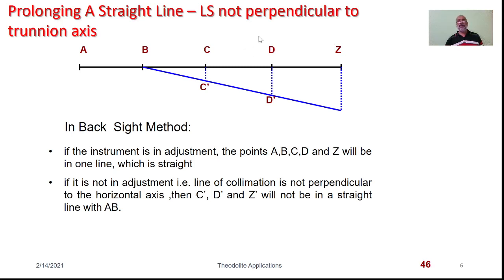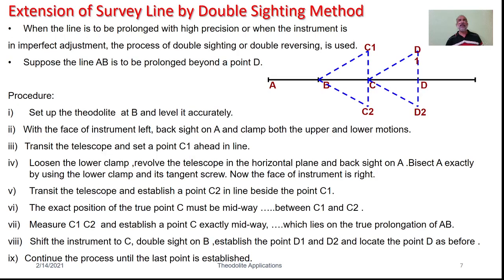Sometimes the line of sight could be erroneous and may not be perpendicular to the trunnion axis. As we follow the backsight method, instead of placing C, D, Z in line with AB, they may be offset, giving locations C-dash, D-dash which are not in line with AB. Under such circumstances, we can use the double sighting method — also known as double referencing — which is adopted when the line is to be prolonged with high precision or when the equipment is not in adjustment.